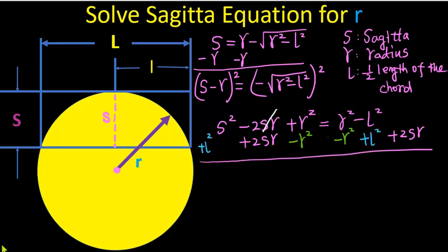Let's add the two lines together. The sum of these terms is 0. So we have s squared plus l squared on the left hand side of the equation.